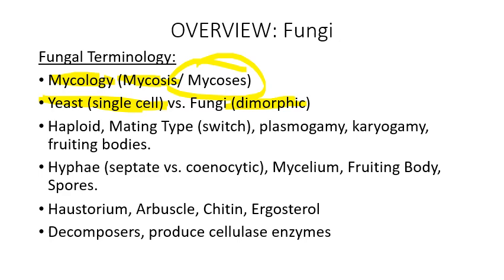Yeast usually exists as single cells unless you're growing them on a petri plate. Fungi exist as multicellular colonies — a multicellular colony is called a mycelium. Fungi are haploid most of the time; they are not diploid. There are not two sexes of fungi, but they have something similar which is referred to as a mating type.